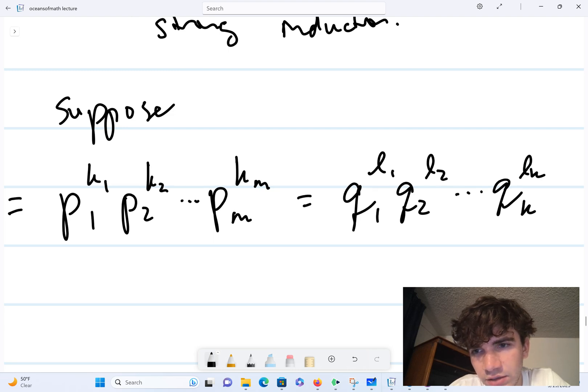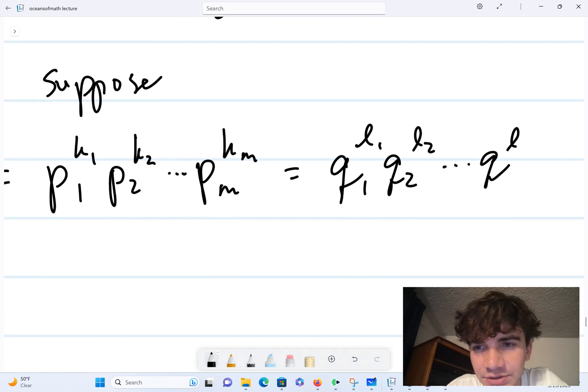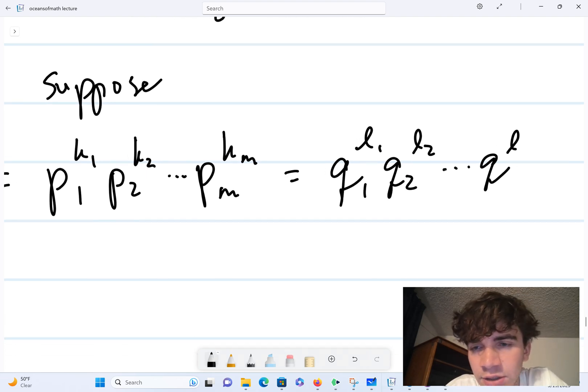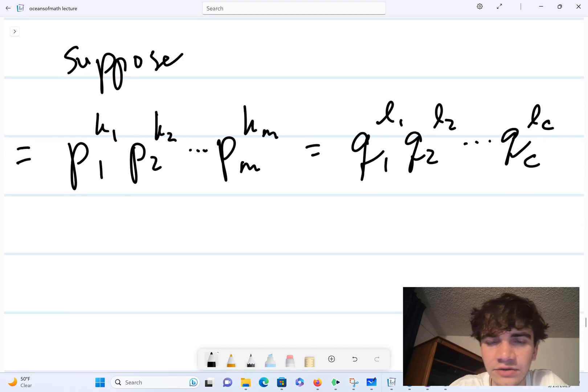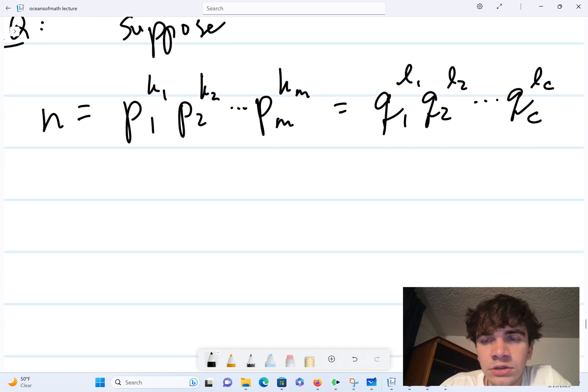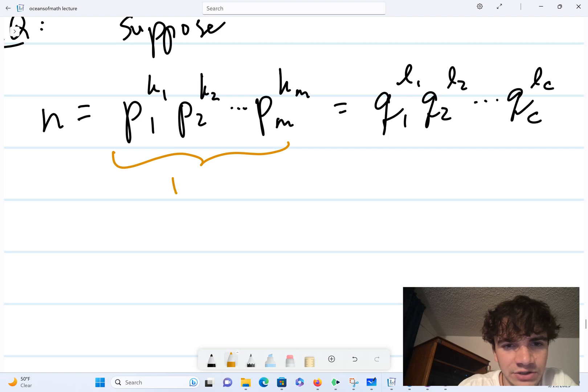And then let's suppose that there's a different prime factorization q1^l1 q2^l2... qk^lk. Oh my gosh, I'm running out of indices here—it's a common problem I guess for number theorists, not enough letters. Let's just call it c, I don't know, for the sake of time.